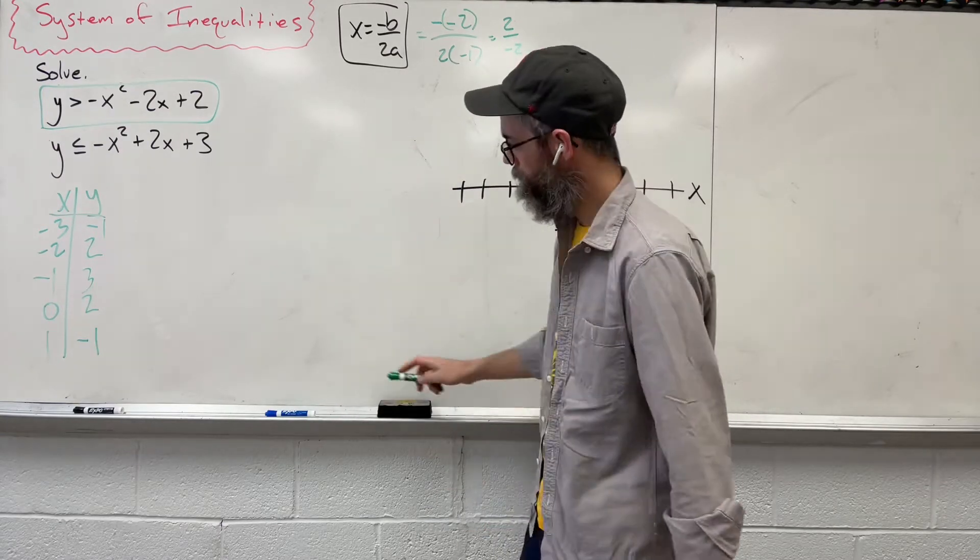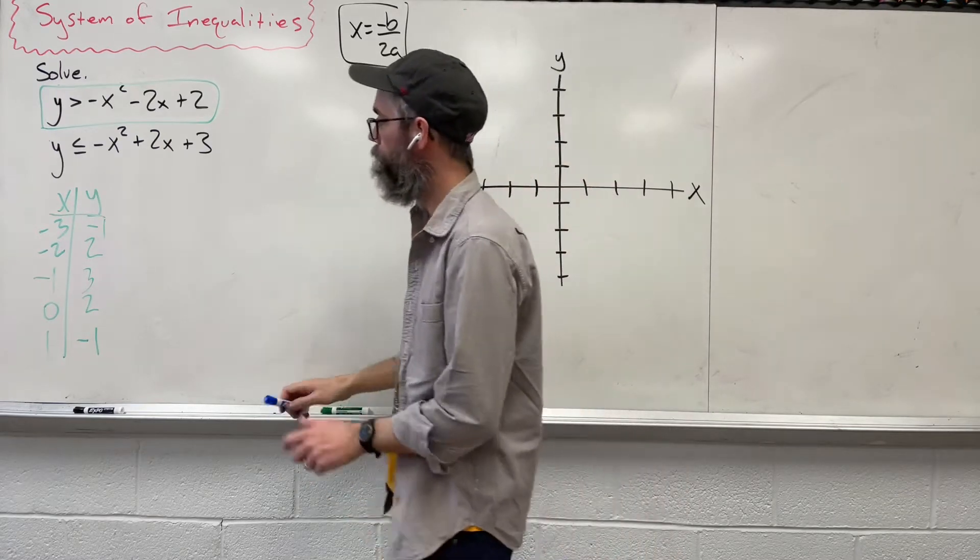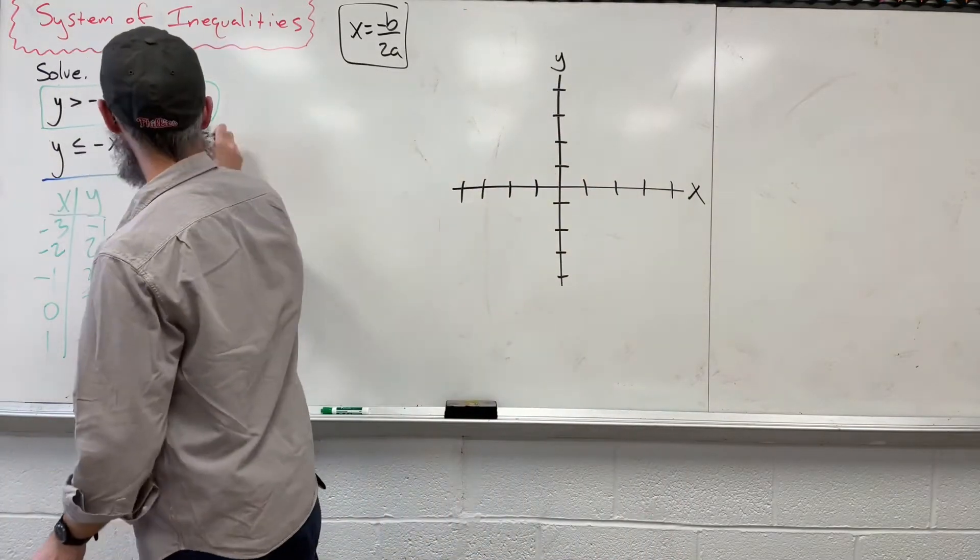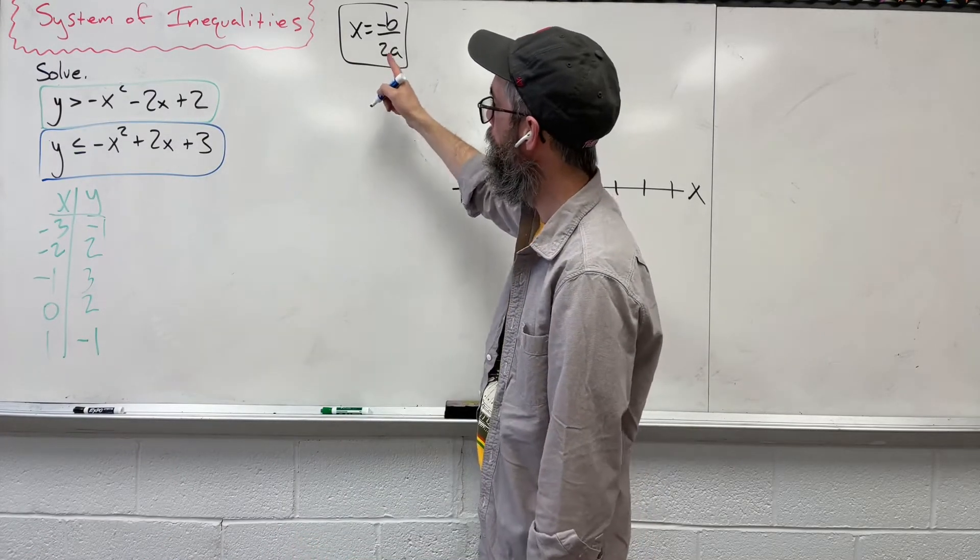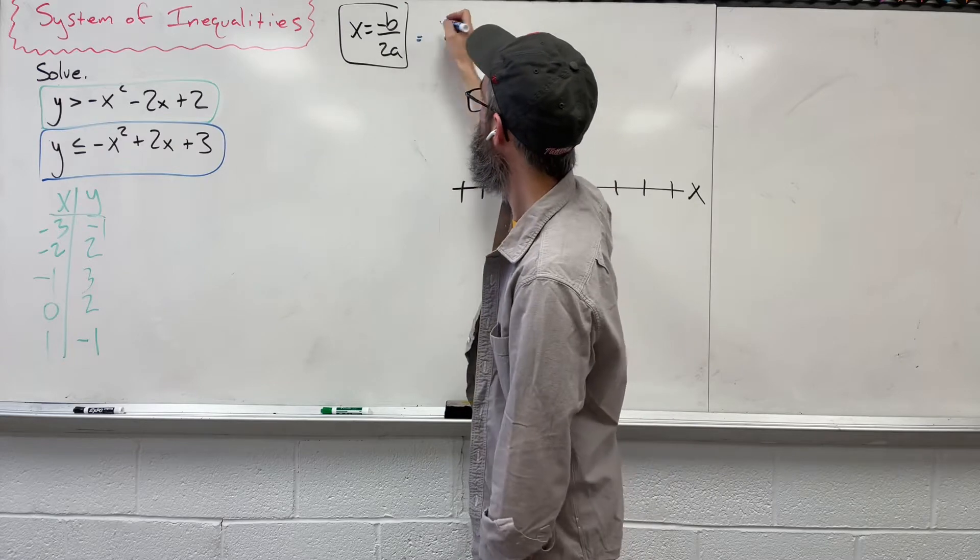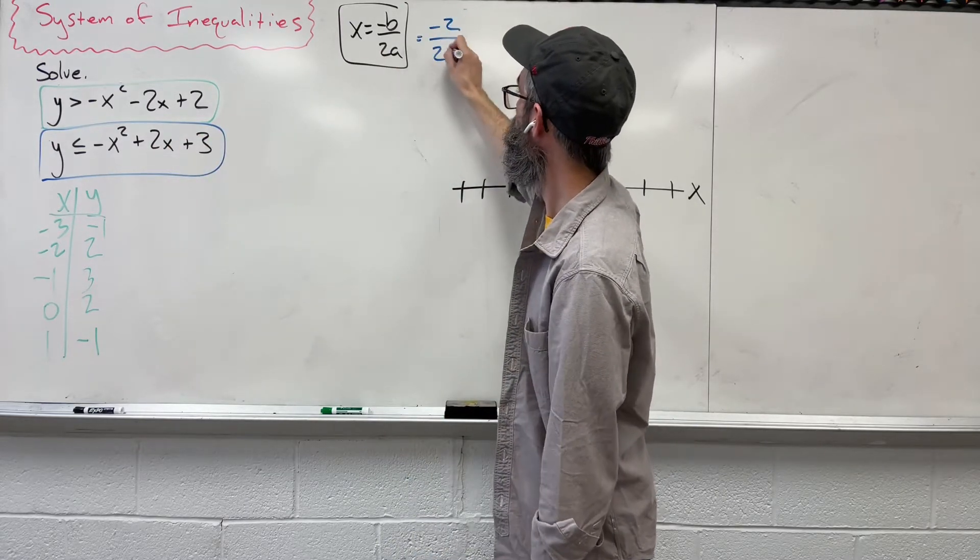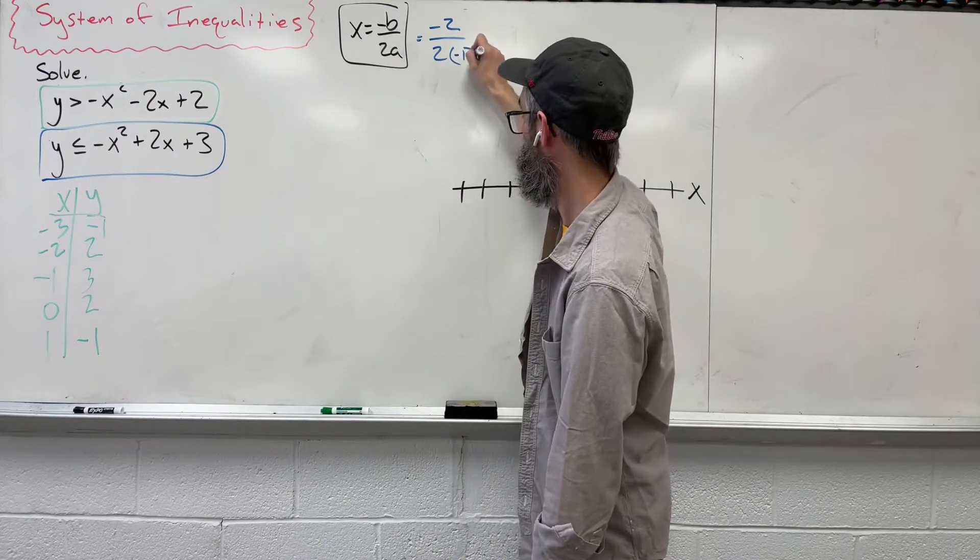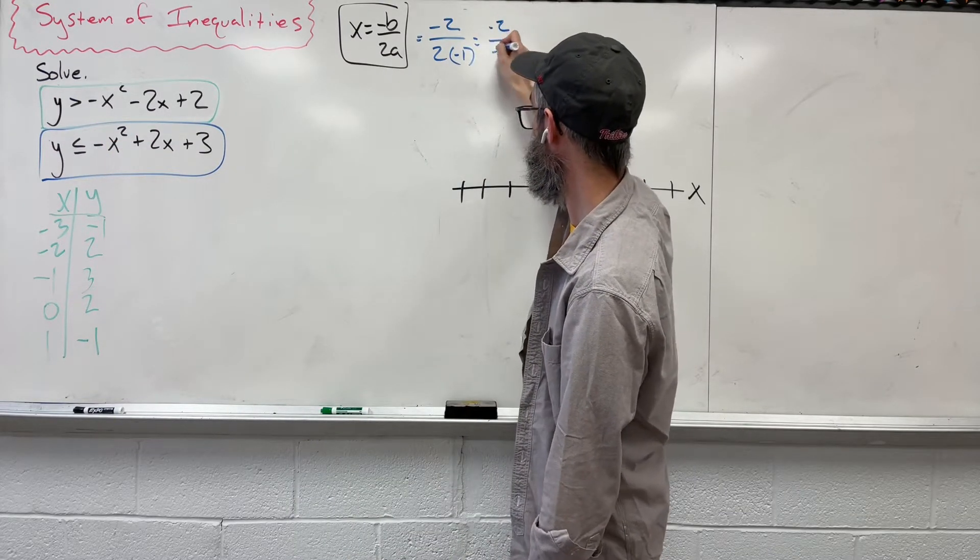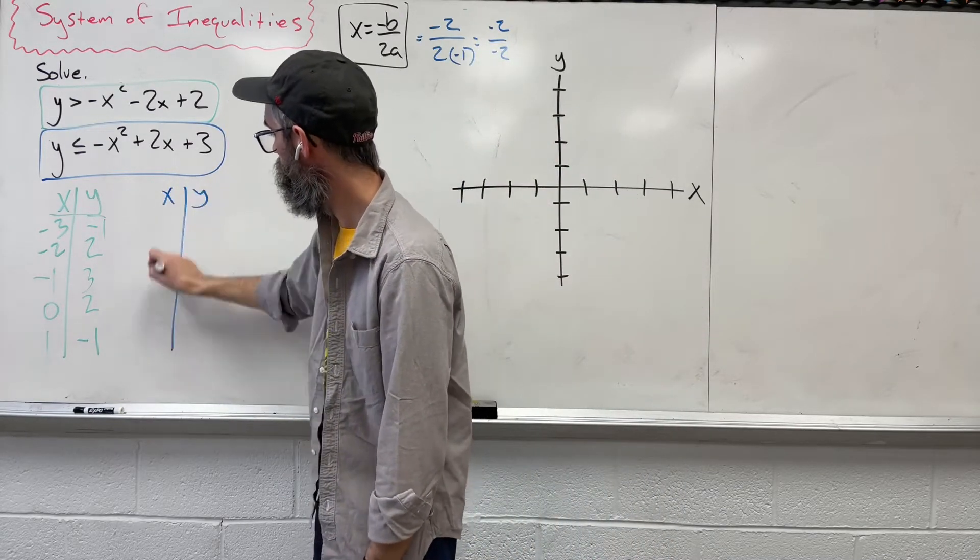And let's come up with all the information for the second inequality. We'll use this one in blue and then we'll come back and we'll graph together. So first we need to find the axis of symmetry. Negative 2 over 2 times my a value in front, negative 1. Giving us negative 2 over negative 2, which is just 1.